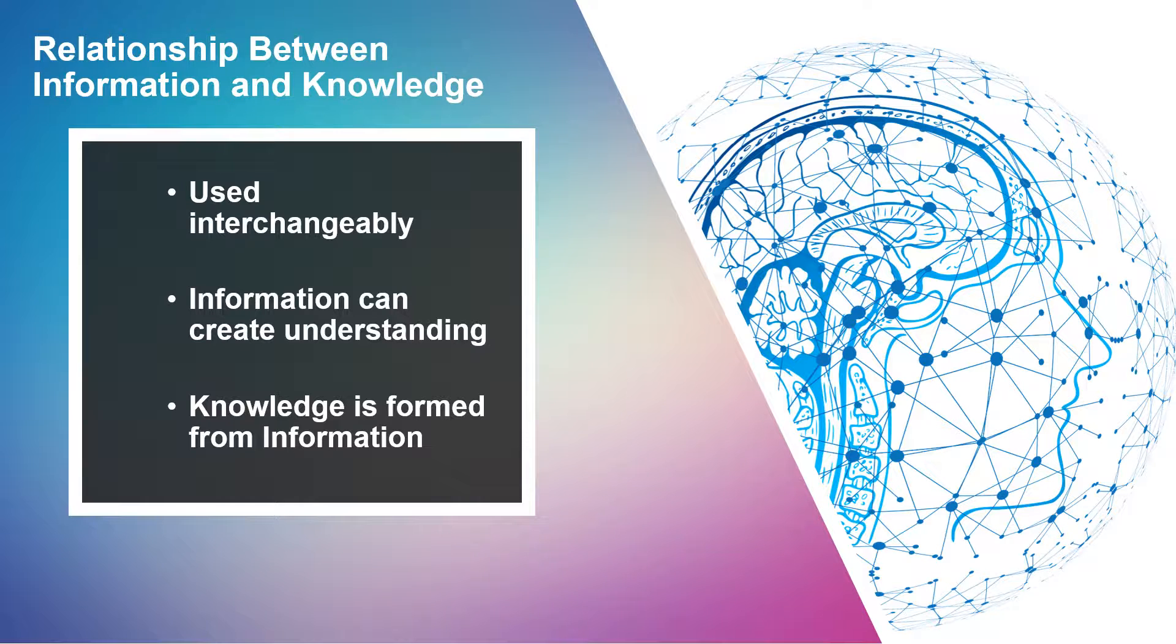So now that we've talked about what information is and what knowledge is, we can talk about the relationship between the two terms. These two terms get used interchangeably on a regular basis, but as we just discussed, they are not the same thing. Information can be used to create understanding and the understanding that it creates is the knowledge. Even though information can exist on its own, if you can't form it into knowledge, it's not always very useful. And information is what you need to form knowledge. You can't have knowledge if you don't have information first. So it can't exist by itself.